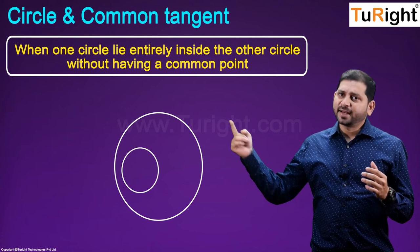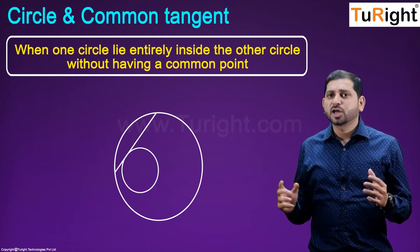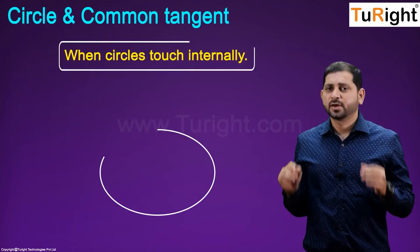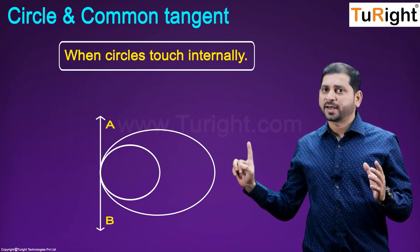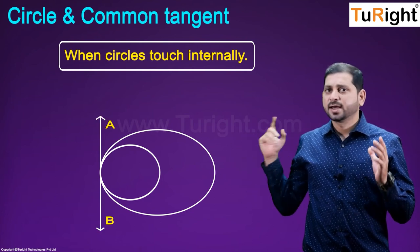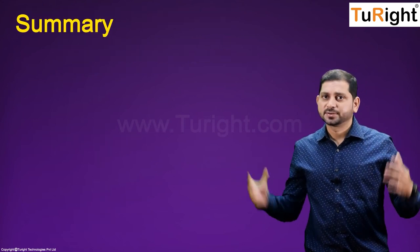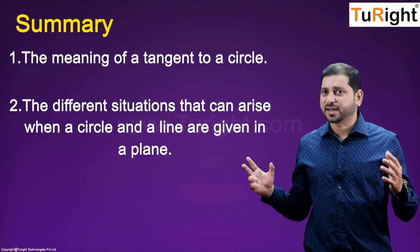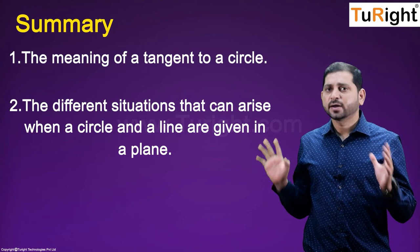Case 4: When one circle lies entirely inside the other circle without having a common point — there are no common tangents in this case. Case 5: When two circles touch internally — there is only one common tangent, AB, to the two circles, as shown. Let us summarize what we learned: the meaning of a tangent to a circle, and the different situations that can arise when a circle and a line are given in a plane.